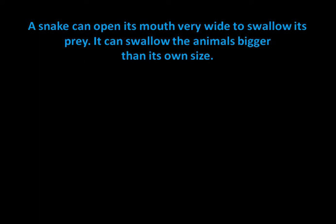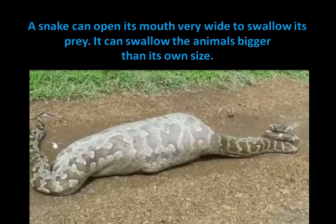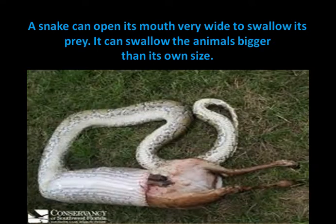The snake can open its mouth very wide to swallow its prey. It can swallow animals bigger than its own size — bigger than the snake's mouth also. A python has swallowed some big animal; it can swallow a bear also. So a snake can eat animals which are bigger than their own size.